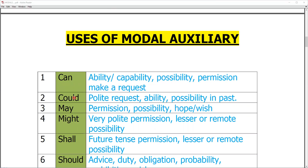Could is the past form of can, where we use for polite request, ability, possibility in past. As I have told you, the past form of can is could.